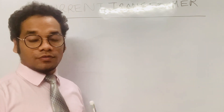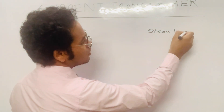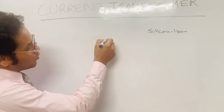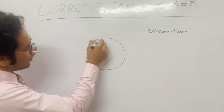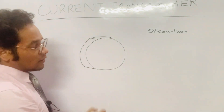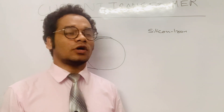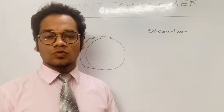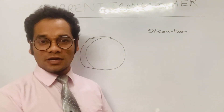In a current transformer we have a core which can be made of silicon iron. The current transformer core is basically in the form of a toroid. On this toroid a winding is wound, and that winding is the secondary winding. In a current transformer, it is only the secondary winding which is wound on the core — there is no primary winding on this core, and we'll get to know why a bit later.